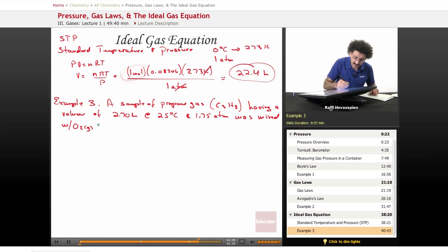Mixed with oxygen gas, having a volume of 40.0 liters at 31 degrees Celsius and 1.25 atm.